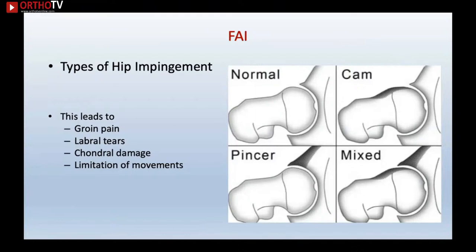There are many etiological studies on how cam impingement develops, but there is no specific reason identified for why the pincer type of hip impingement develops — no studies have shown this. However, if you have a coxa profunda hip or a protrusio hip, that obviously causes the pincer type of impingement.